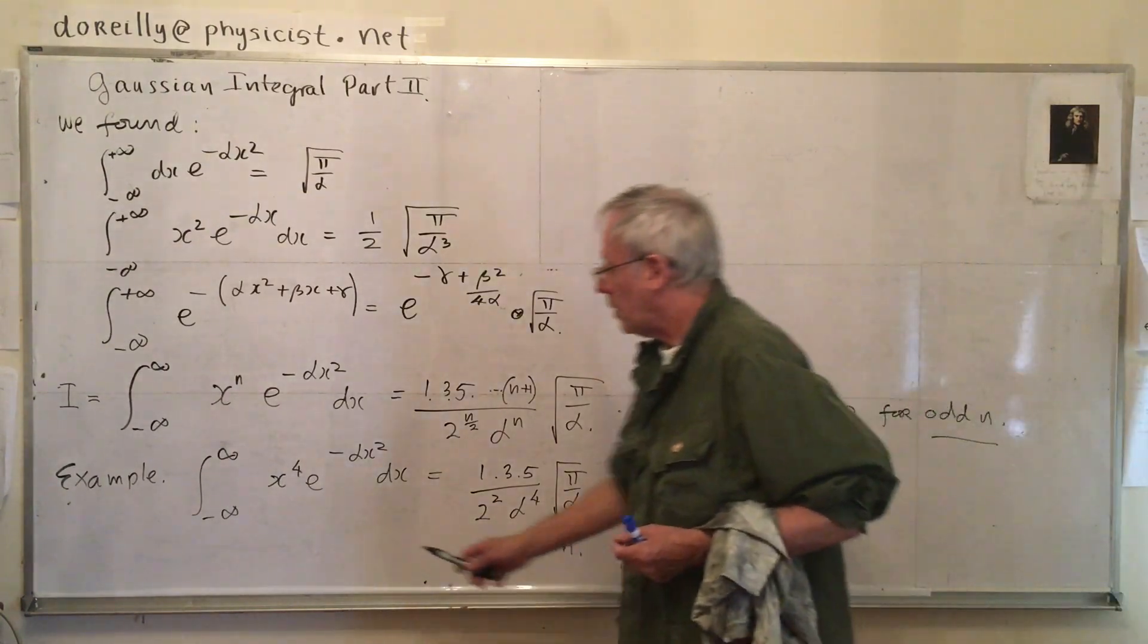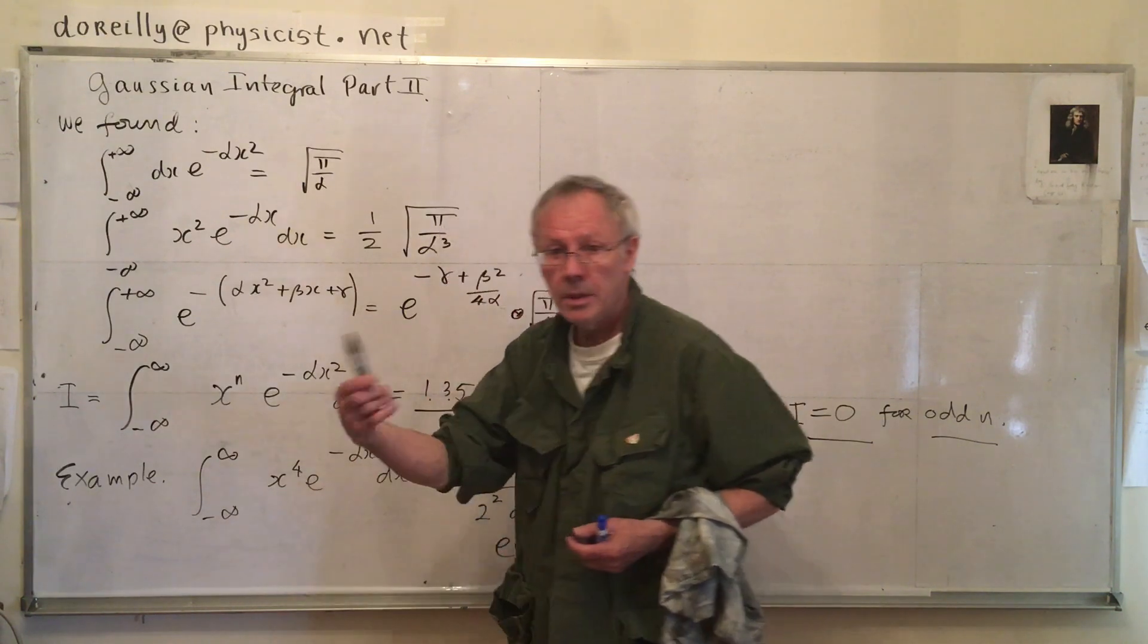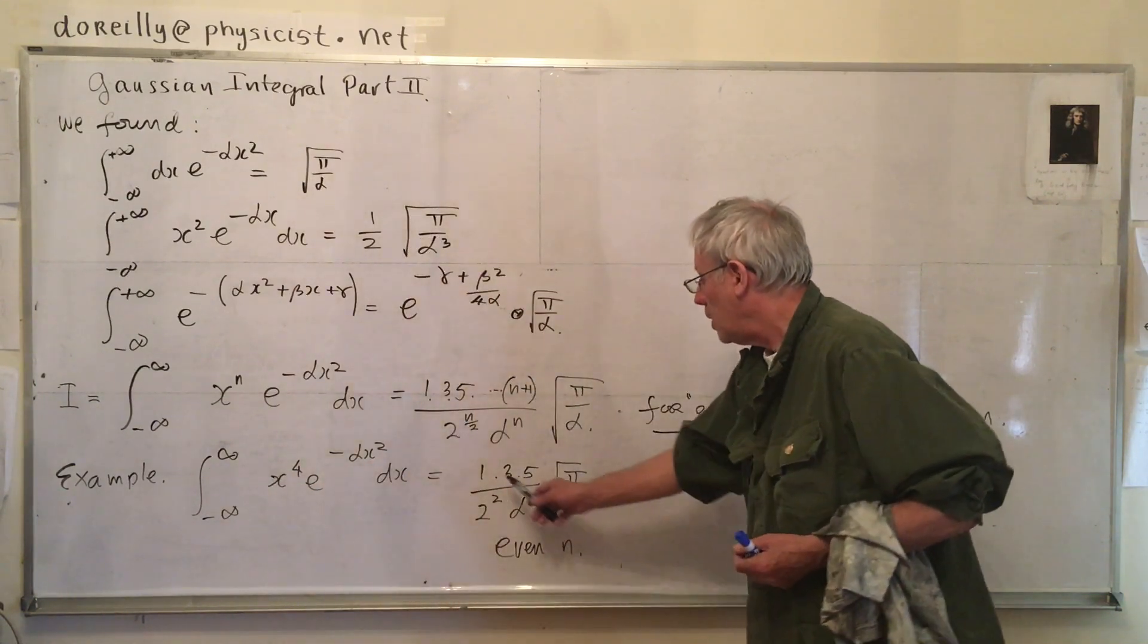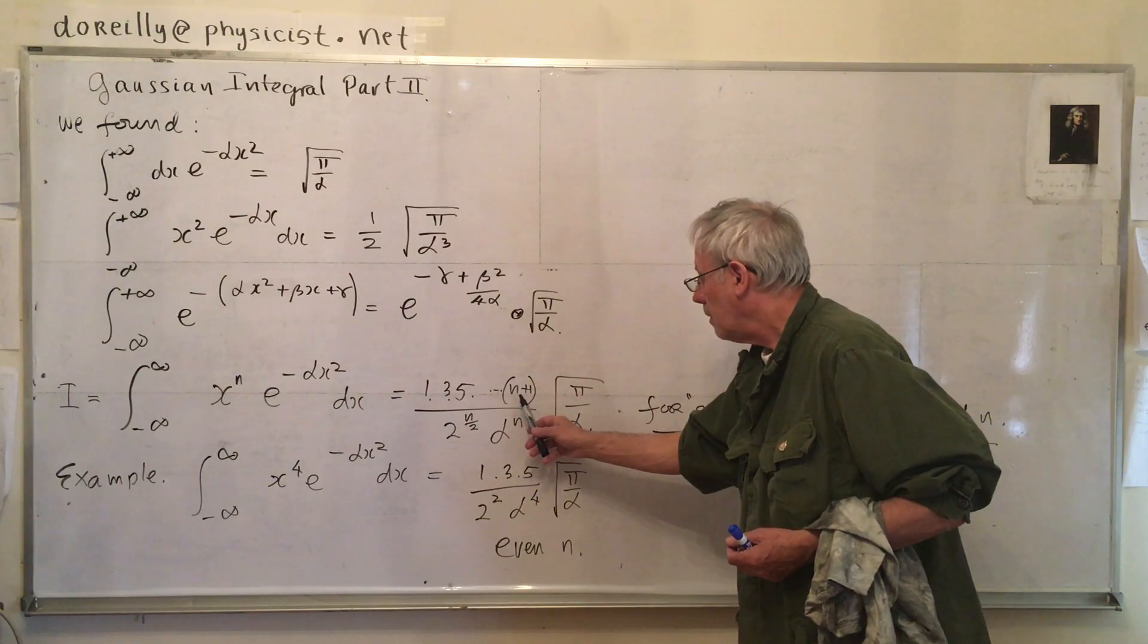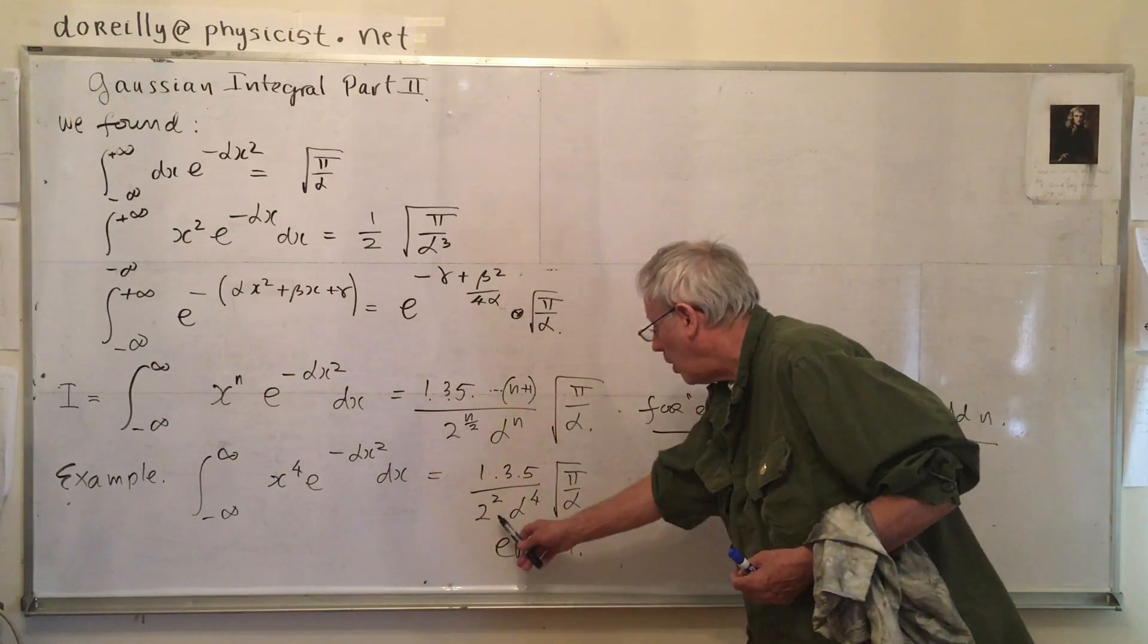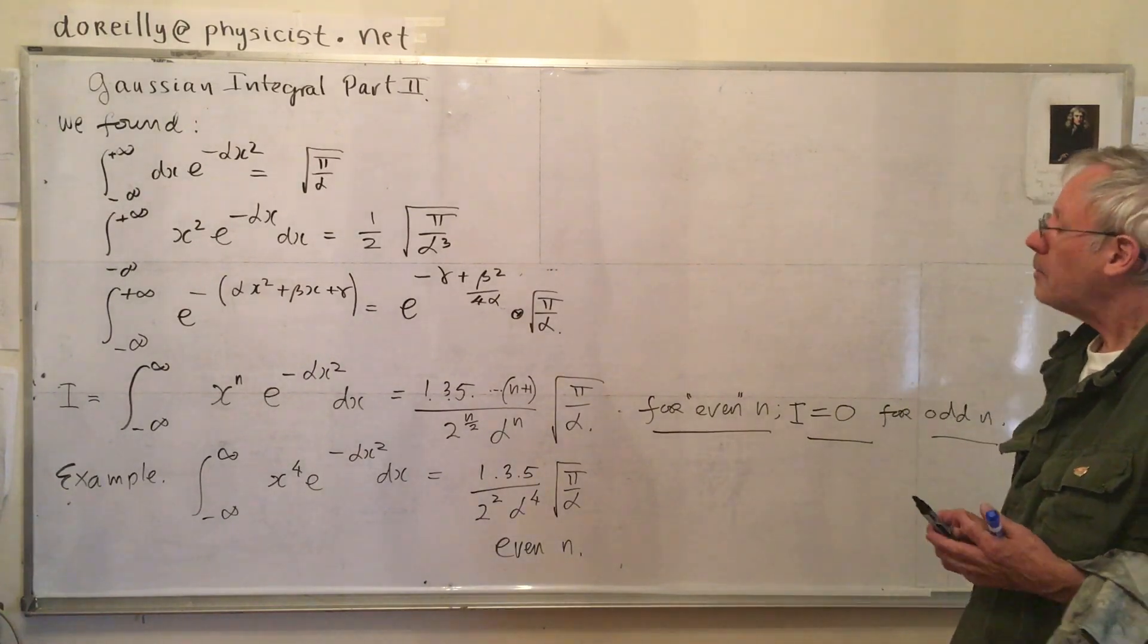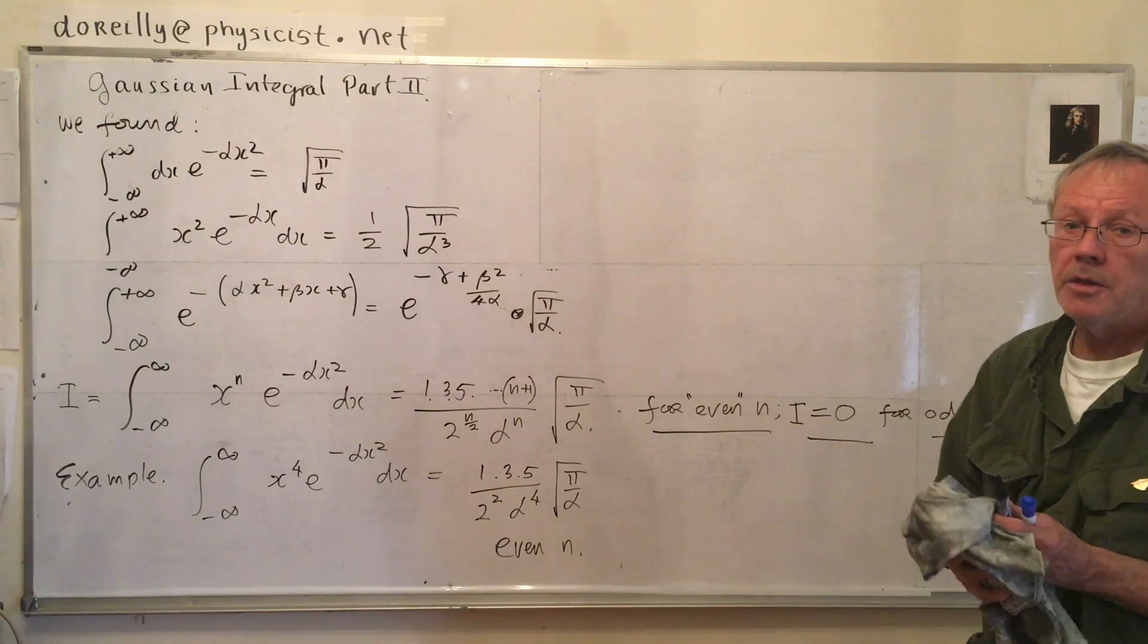Here's an example. The integral from minus infinity, I did x squared up here. Let's do x to the fourth. x cubed, that's zero. x to the fourth, e to the power of minus alpha squared dx, integrated from minus infinity to plus infinity, is 1, 3, 5, that's as far as we go, because 4, is that right? Yeah, 4 plus 1 is 5. So, over 2 to the power of 4 over 2, which is 2, alpha to the power of 4, root pi over alpha, even n. Now, that's really most of what we need, except for the following.